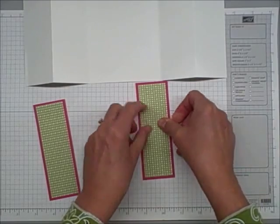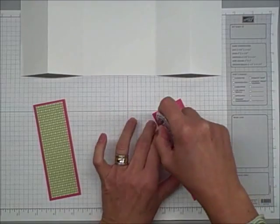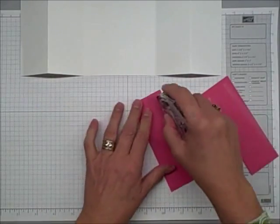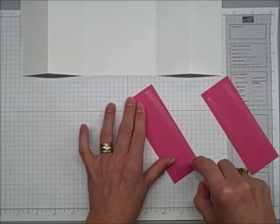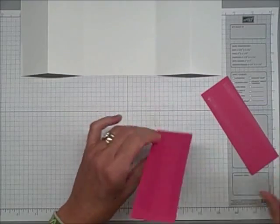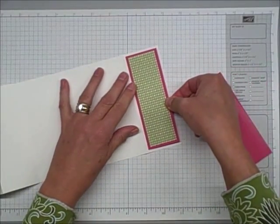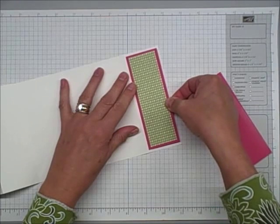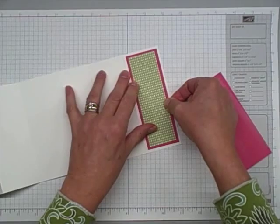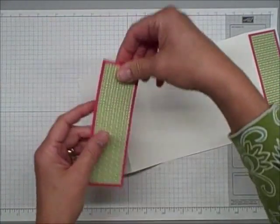There's panel number one. Just getting it square on there. And then I'm going to go ahead and adhere to the outside of the card. And there. I'm just squaring that up.